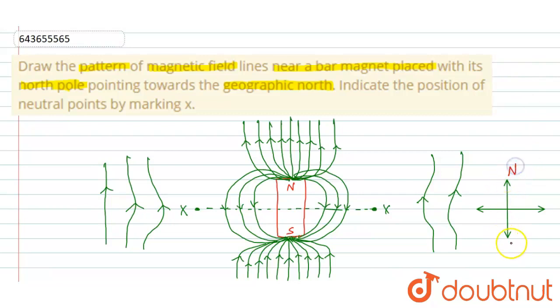Here the north pole, here the south pole, here the west, and here the east. Okay, so this is the magnetic field lines pattern near a bar magnet placed with its north pole pointing towards the geographic north.